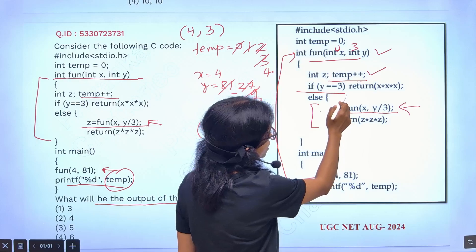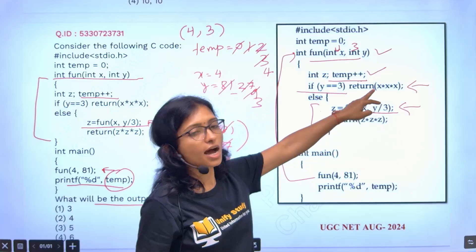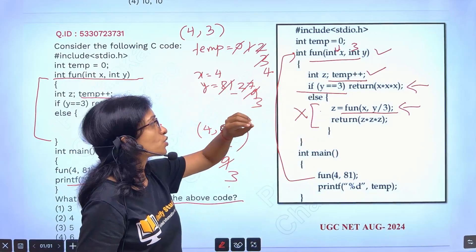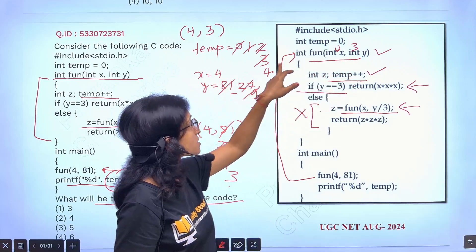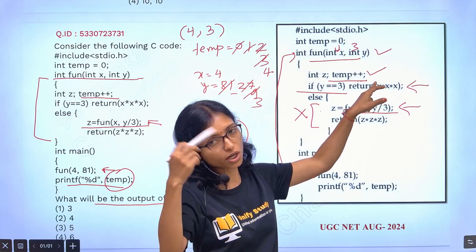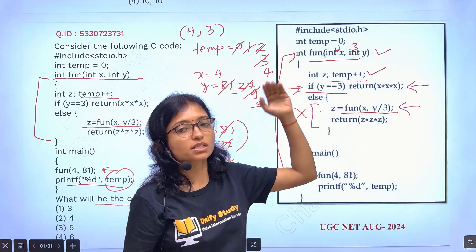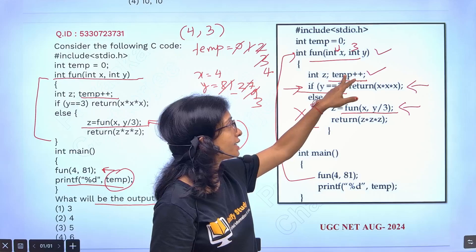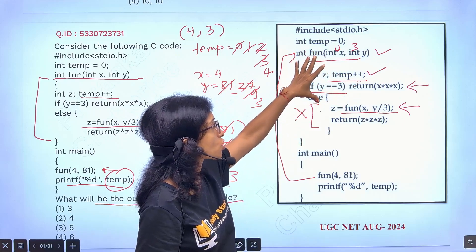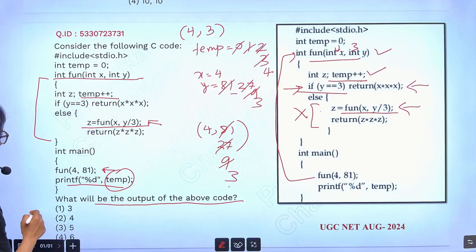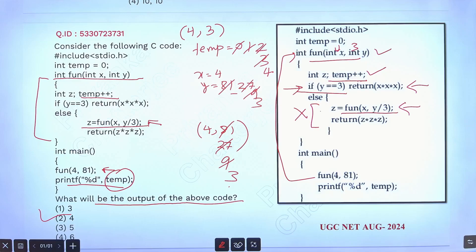After that, this if condition will be true, then this return statement will start execution — that means this time it will not run the else part. So the temporary variable's last value is 4. After that this return statement will start execution from the stack — this was pending, so it will take it from the stack and then start executing. But ultimately, my temporary variable — how many times this function is calling — 4 times, and the temporary variable final result is 4. That's why your answer will be 4 here. So here your answer is 4. Clear to everyone — I hope so.